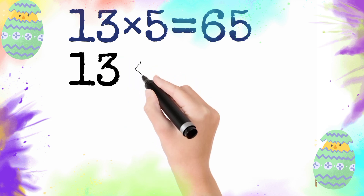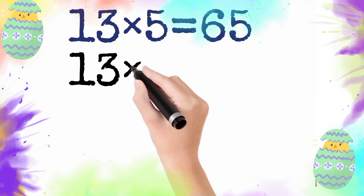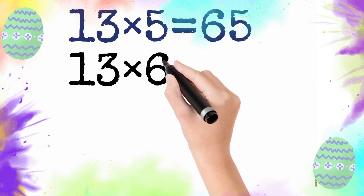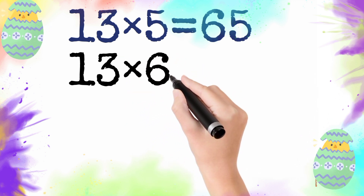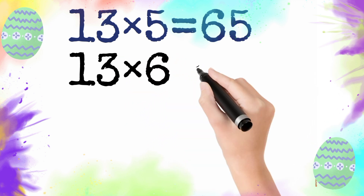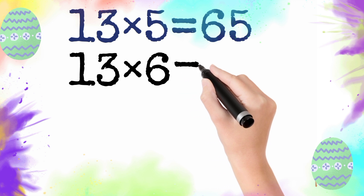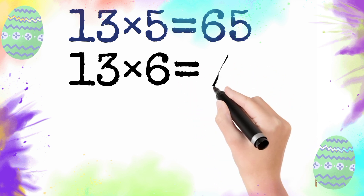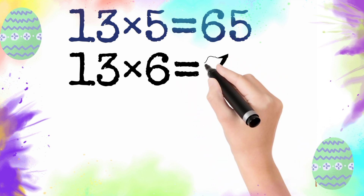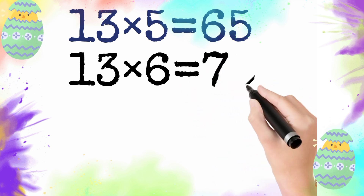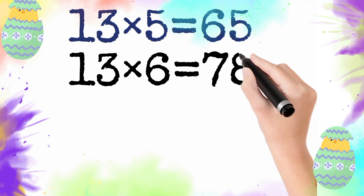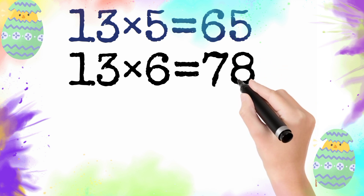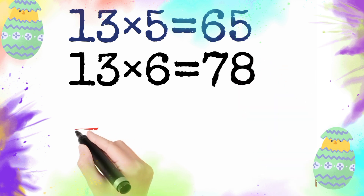13 multiply by 6 is equal to 78. So 13 times 6 is 78.